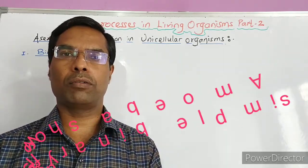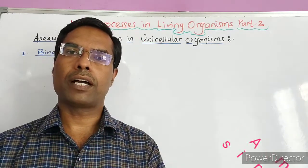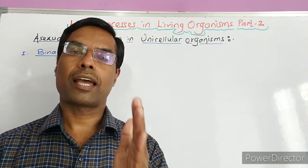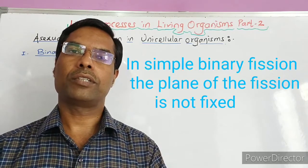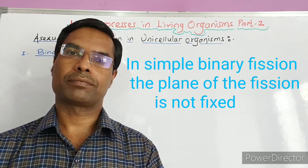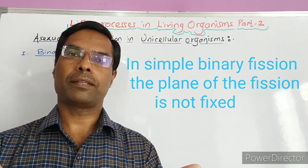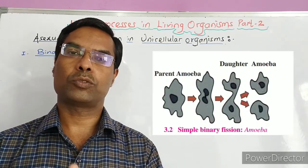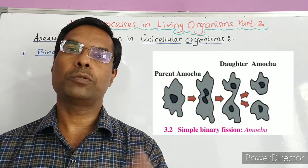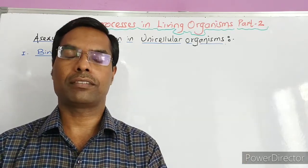Amoeba is having an irregular shape. So amoeba has simple binary fission because the plane of fission is not fixed and so it is called simple binary fission. The nucleus divides first of all and then it is followed by division of cytoplasm. So single amoeba gives now two amoeba and this takes place in favorable conditions.